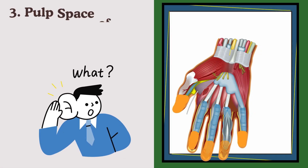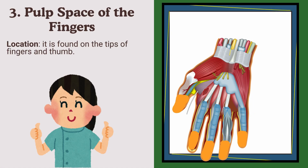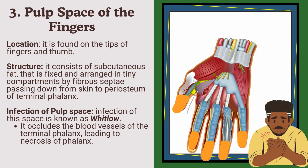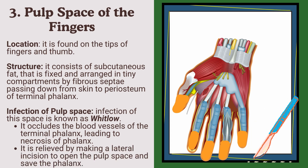The pulp space of the fingers. Location: it is found on the tips of the fingers and thumb. Structure: it consists of subcutaneous fat that is fixed and arranged in tiny compartments by fibrous septa passing from the skin down to the periosteum of the terminal phalanx. Infection of this space is known as whitlow. It occludes the blood vessels of the terminal phalanx, leading to necrosis of the phalanx.